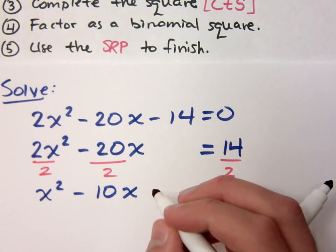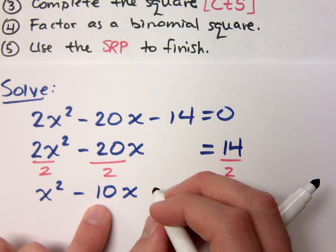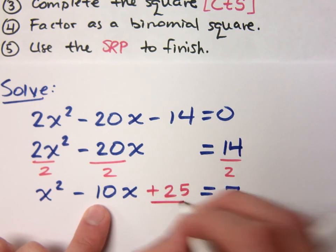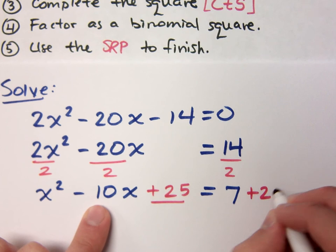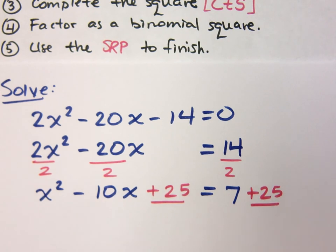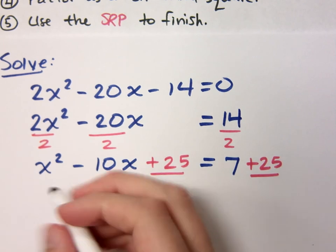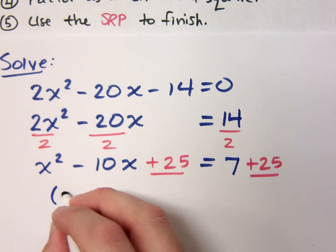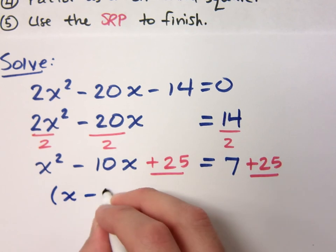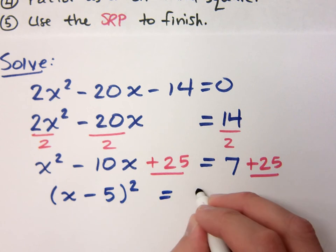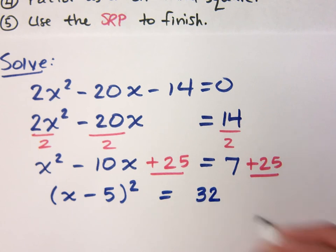So it's going to be 25. Half of negative 10 is negative 5, squared is 25. You have to add that to both sides. So on the left side, how does it factor? x minus 5 — so x minus 5 squared equals 32. I've factored it as a binomial square.